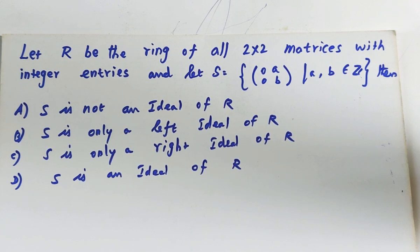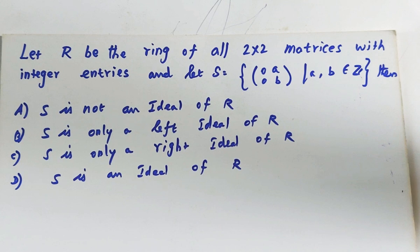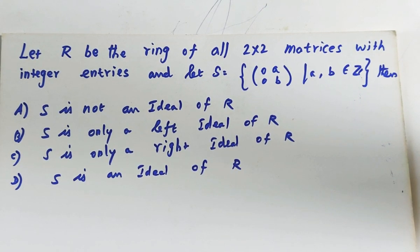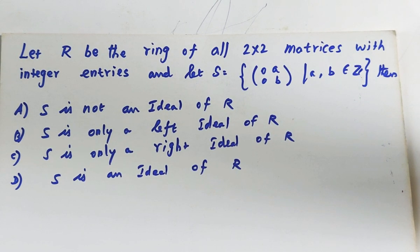Question one: Let R be the ring of all two cross two matrices with integer entries, and let S be equal to the set of all two by two matrices of the form [0, A; 0, B] where A and B are integers. Then the set S is — options: S is not an ideal of R; S is only a left ideal of R; S is only a right ideal of R; S is an ideal of R.